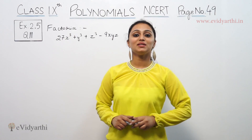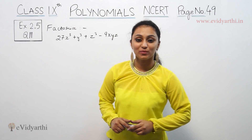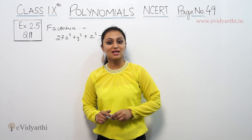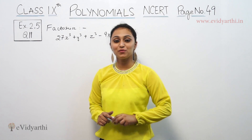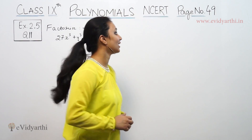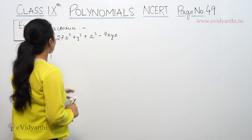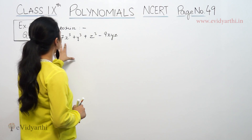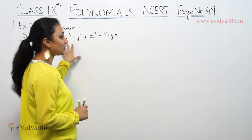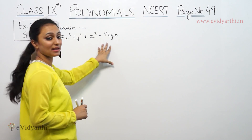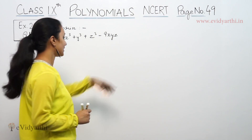Hi, this is Khushku with another question of Polynomials. This is question number 11 from exercise 2.5, page number 49. It says factorize 27x cube plus y cube plus z cube minus 9xyz.